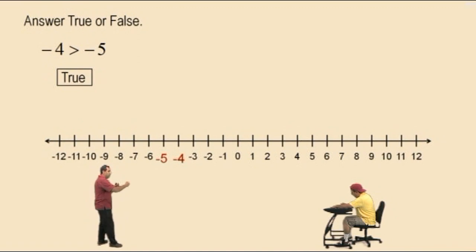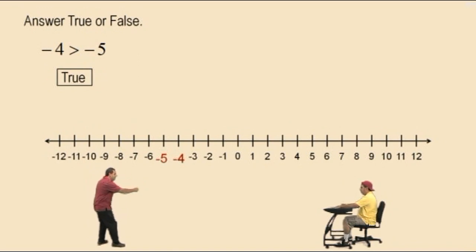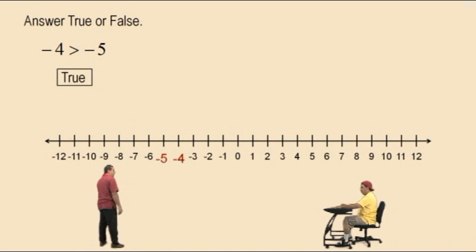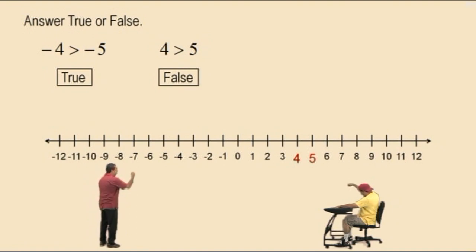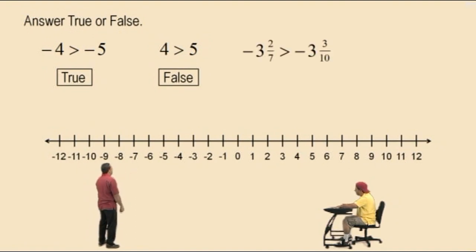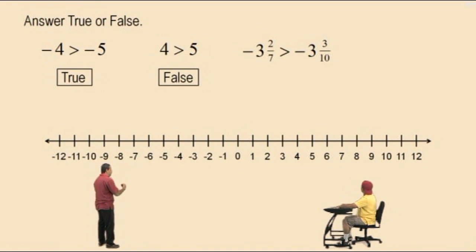Now some of you think: well, negative 4 is closer to 0 than negative 5. That's true — if it's closer to 0, it means it's to the right of negative 5. All right, Charlie, let's do another one. 4 is greater than 5 — true or false? False. That's obviously false. 4 is actually less than 5; look at the number line, it's to the left of 5. Now how about this one: negative 3 and 2 sevenths is greater than negative 3 and 3 tenths. Ooh, this is a tough one.